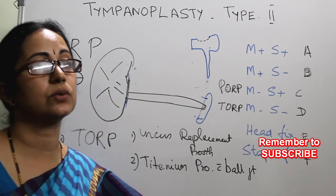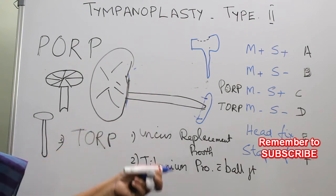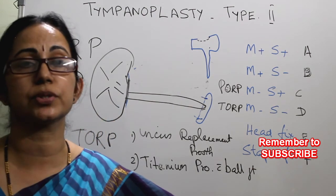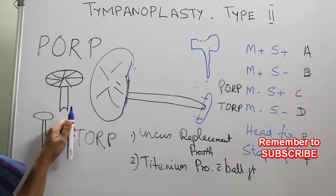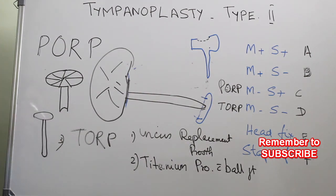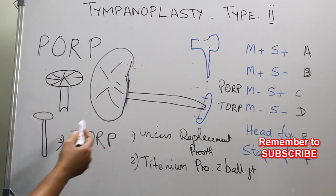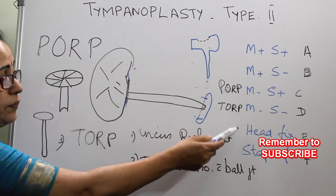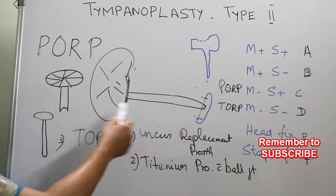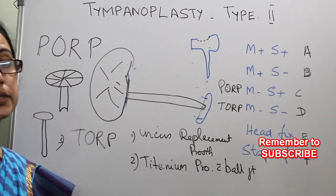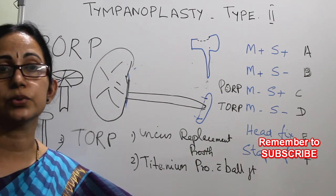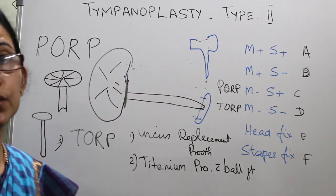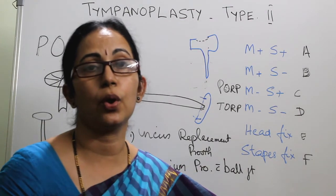For type F — fixation of the footplate of stapes — you can do a classical stapedectomy or a stapedotomy. It is always better to keep a cartilage sheet between the tympanic membrane and the end of the prosthesis as a cartilage cover. For that, you can use a single block of cartilage or a double block cartilage.